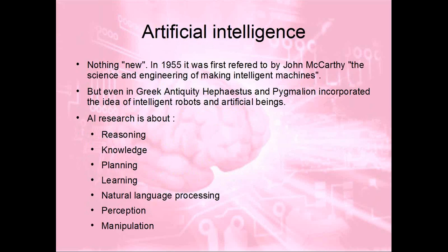Let's talk about artificial intelligence. It's not really something new — it came up in the 50s when John McCarthy spoke about making intelligent machines, but even long before that, mankind thought about intelligent robots and artificial beings. Today, looking at the group under artificial intelligence, we see a number of disciplines: reasoning, representing knowledge, planning, learning, natural language processing, natural speech, perception like machines able to sort objects based on form, and manipulation like intelligent robots on assembly lines.